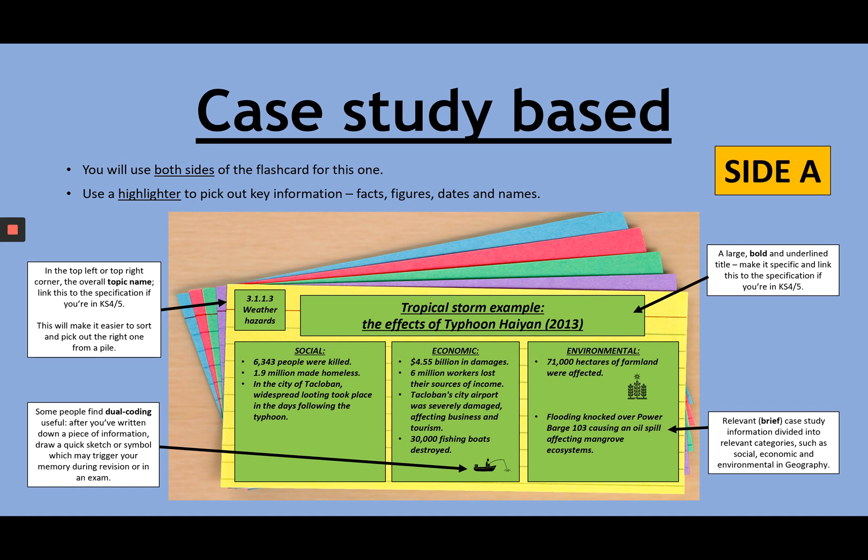You could be doing up to 15 case studies and examples for GCSE geography, and perhaps many more for A-level. Now, the other one is you don't really need to know much more than what is on here. You may decide that you don't want to include this third fact here for the social box, and you could swap it in for another. That's fine.